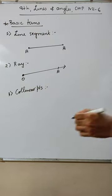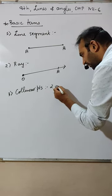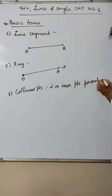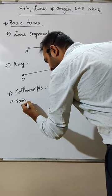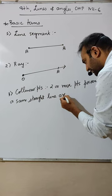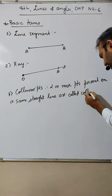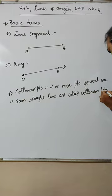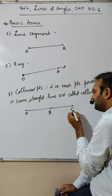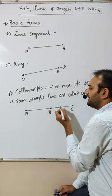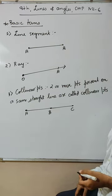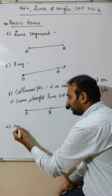Next, third: collinear points. Two or more points present on the same straight line are called collinear points. For example, points A, B, C — A, B, C are present on the same line.